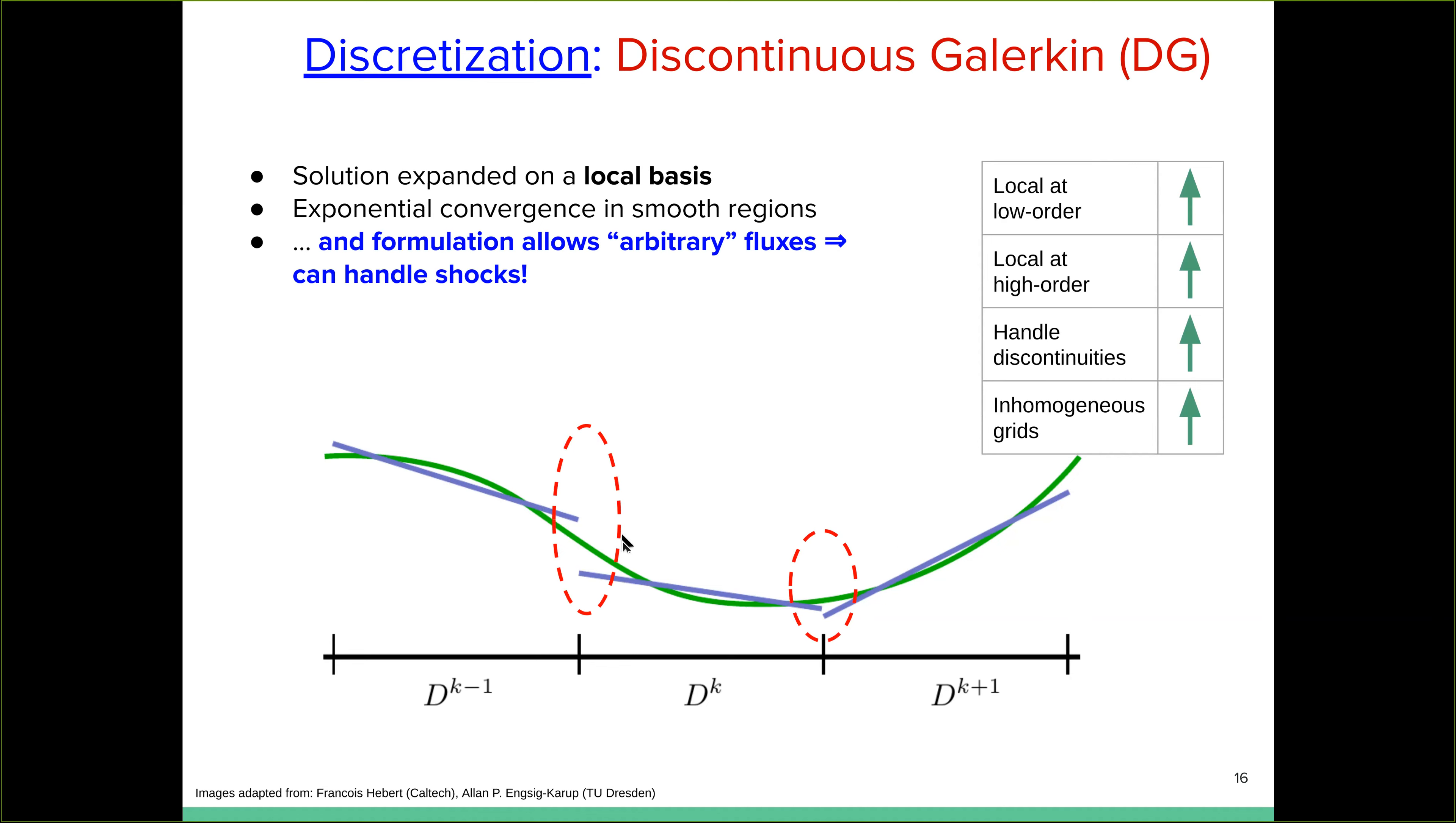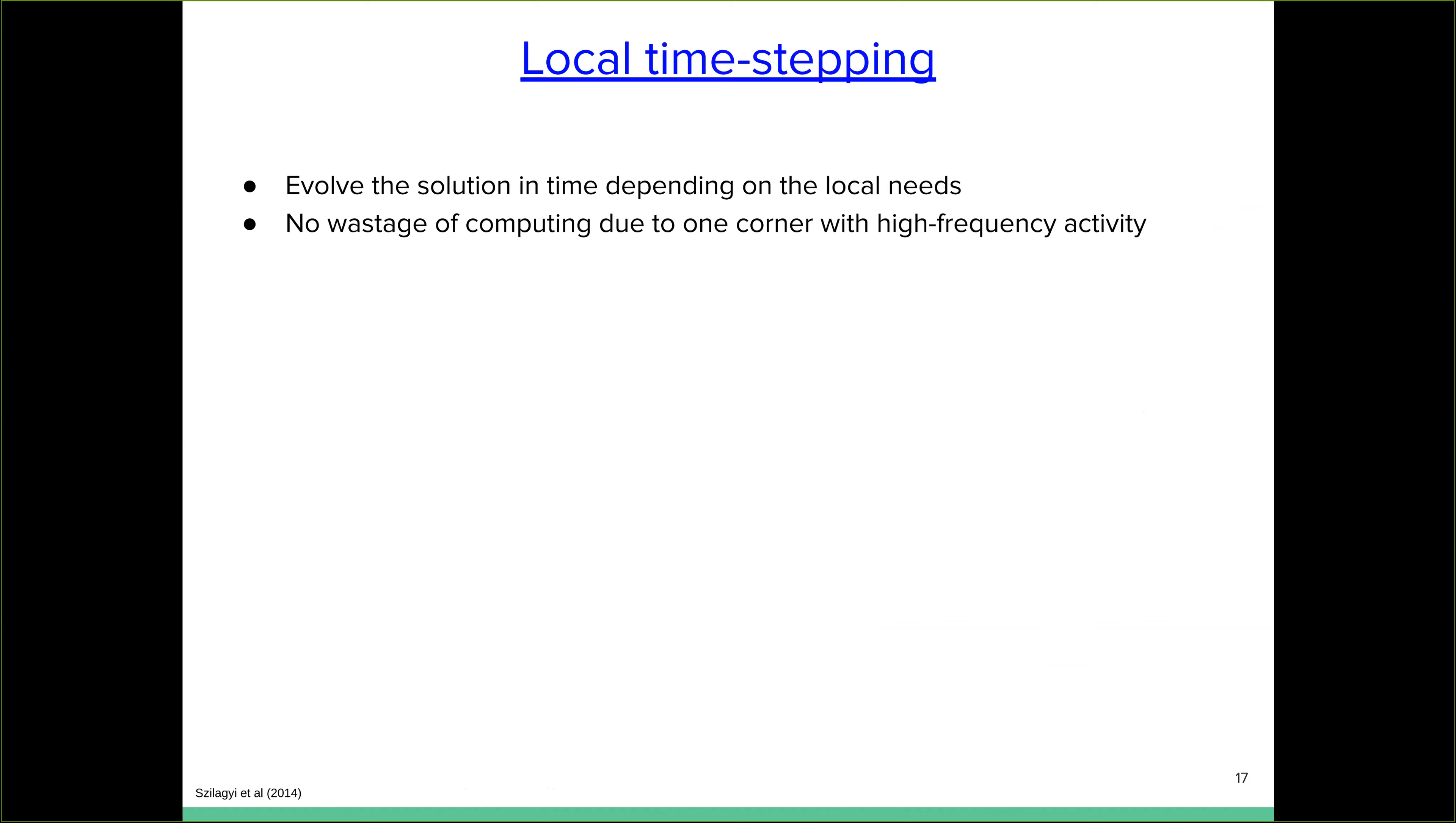DG allows for arbitrary fluxes to be provided across element boundaries. So in this sense, DG takes the best of both worlds. It takes the best of the spectral approximation and the finite volume methods, right? And because the solution is again, expanded locally in each element, you have a high accuracy in all, you can have as high accuracy as you want in the smooth regions, while you can reduce the order in regions that are developing shocks and the neighbors will not feel the effect of it. So it's local at all orders, you can handle discontinuities. And it is quite amenable to using inhomogeneous grids, just like finite volume methods.